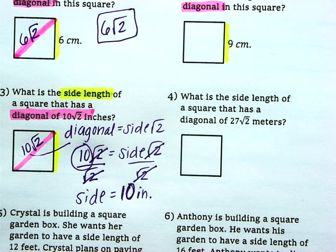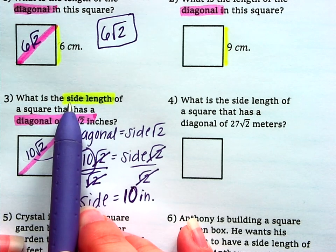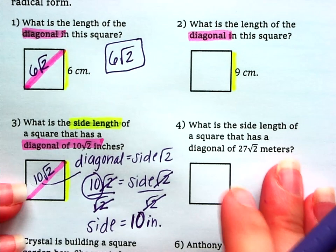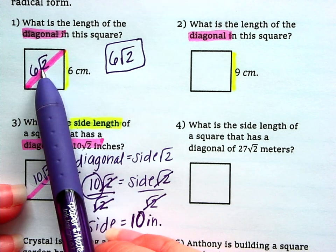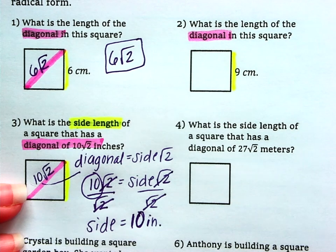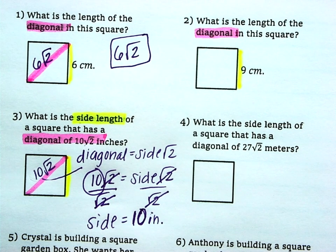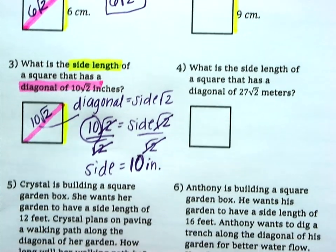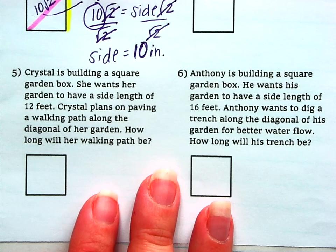So, when they gave us the diagonal, we just had to take the Radical 2 off to go to the side length. Whereas on number 1, they gave us the side length. And we had to put the Radical 2 on to get the diagonal. So, put it on, take it off, depending on what they give you. Okay, so that's practicing just the property.